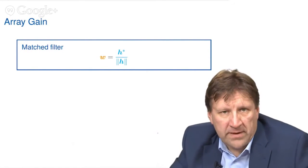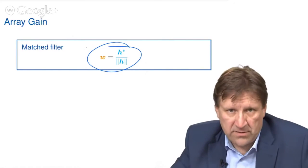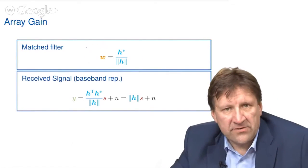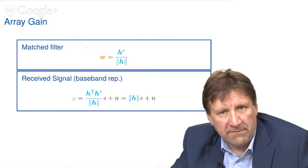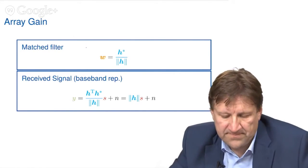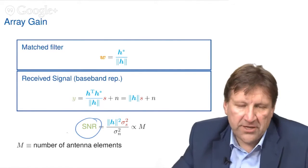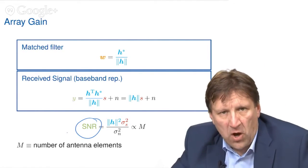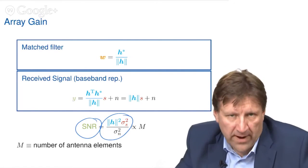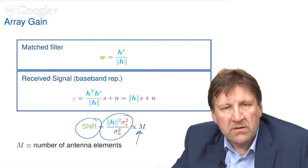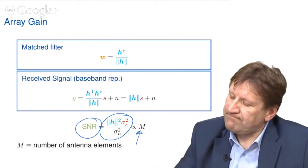So let's summarize. If we choose the beamforming vector as a matched filter, so the W is equal to the conjugate complex of the channel vector normalized by the length of the channel vector, we have this received signal model. The received signal Y at the receiver is a scaled version of the dedicated signal S, where the scaling factor is the norm of the channel vector and the noise. For the relation of the signal portions, the SNR, which is the ratio between the power of the desired signal over the power of the noise, is this term. And this shows that under certain requirements and assumptions, this is proportional to M, which is the number of transmit antenna elements. It is called the array gain.